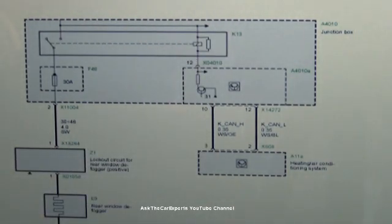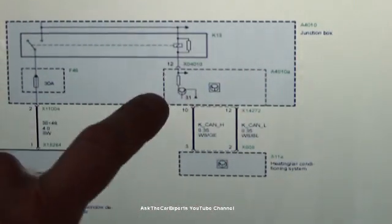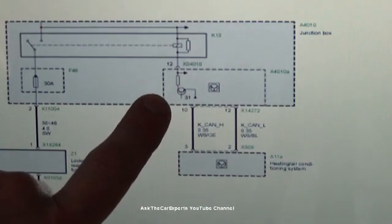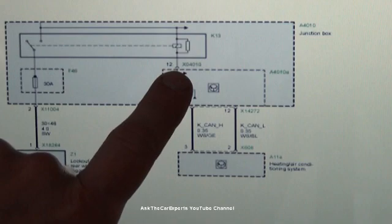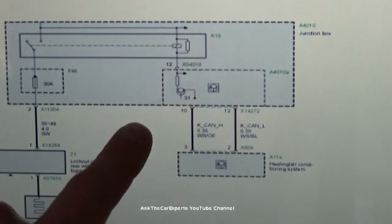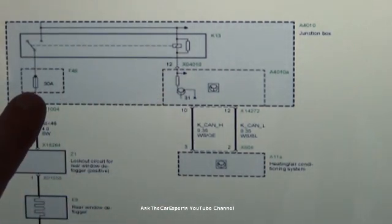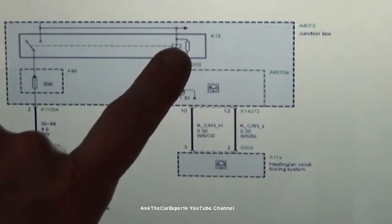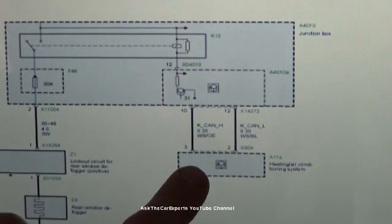So, in a workshop setting, how I would check this is I'd be removing the junction box electronics module, and you would have access to this pin right here, pin 12, and then I would manually ground that with a jumper wire, which would close this relay, and then I should see power here going to this fuse. That checks the relay.